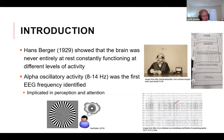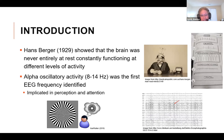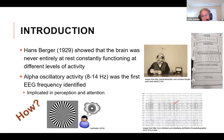Just to start off with, in the very beginning, Hans Berger showed that the brain was never entirely at rest — it's constantly functioning at different levels of activity. One of those levels, which he was the first to identify, is alpha activity, which is 8 to 14 hertz. You can see in the bottom right the arrow is pointing to such activity. This activity has been implicated in a wide range of functions, including perception and attention. However, despite almost a century of research, it's still not clear exactly how alpha oscillatory activity mediates perception and attention.